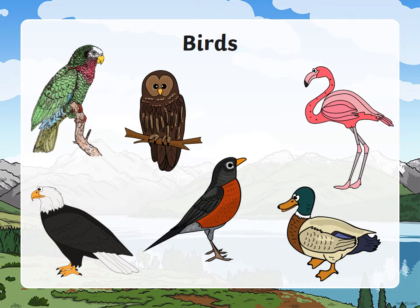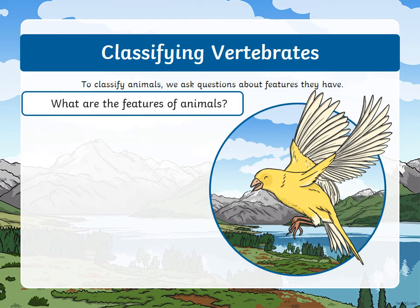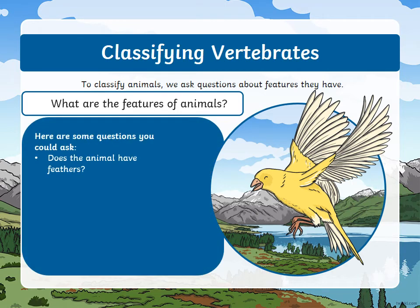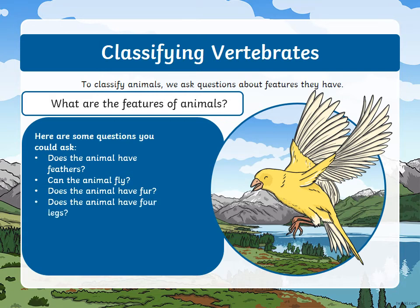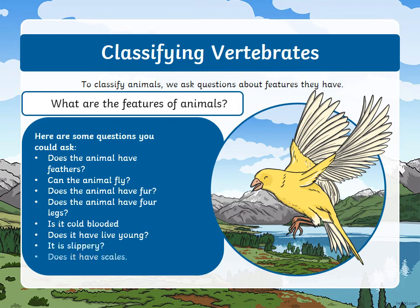Let's look at the birds. Birds are another group of vertebrates. Does it have feathers? Yes. Can it fly? Yes. Does it have fur? No. Does the animal have four legs? No. Is it cold-blooded? No. Does it have live young? Yes. Is it slippery? No. Does it have scales? No.